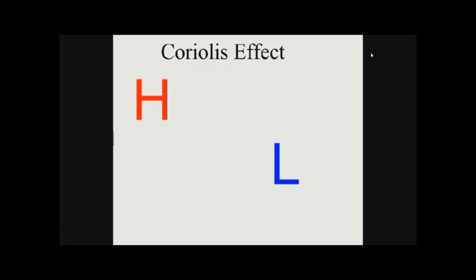The Coriolis effect is an apparent curve of the path of different objects as they move within something that's rotating. We're going to focus on the Coriolis effect in wind. Air always moves from higher pressure to lower pressure. In this diagram we've got a high pressure system and a low pressure system — the air moves from high to low, but since the earth is rotating, that motion causes the wind to curve to the right in the northern hemisphere, and to the left in the southern hemisphere.